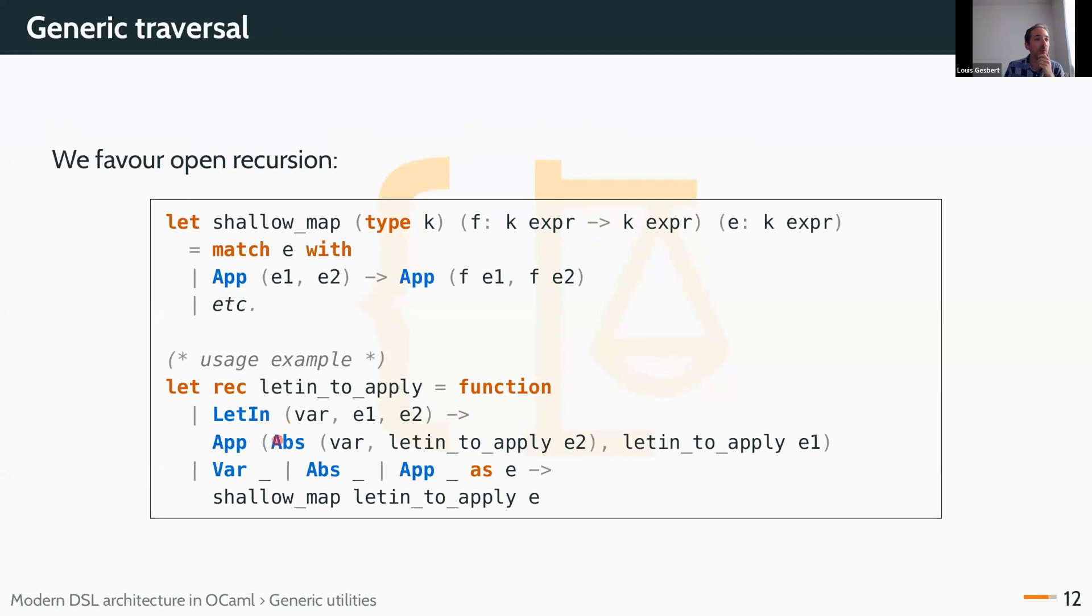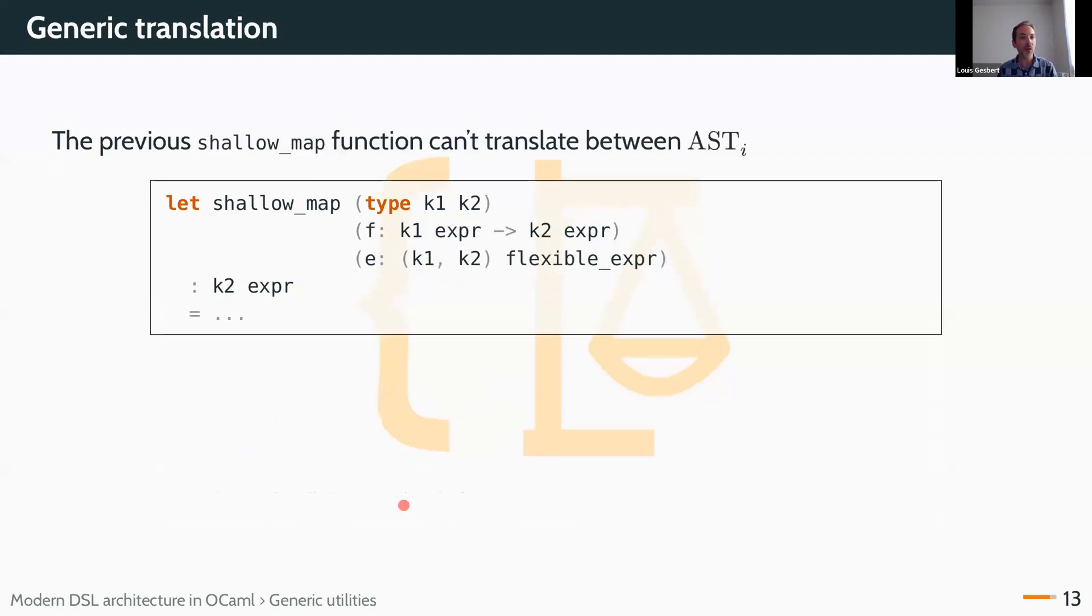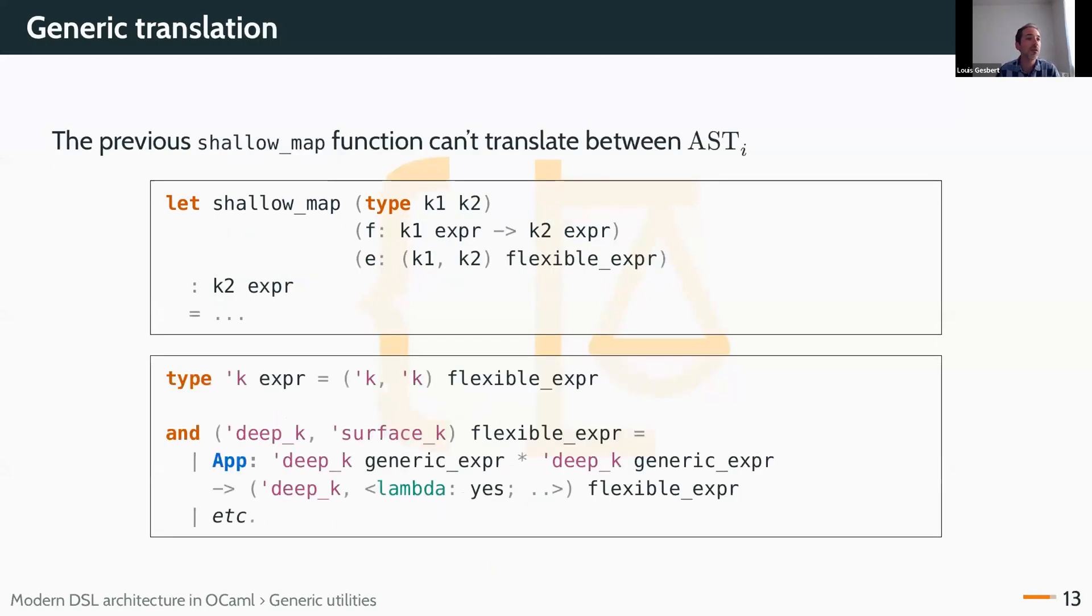What that means is that here, when I match this node, actually the translation is only using let-in to app, so there's no trouble. But here, I already know that let-in has been excluded from that match case. When I call shallow_map here, I know that the surface term can't be a let-in, so the deep term can't be a let-in either. And I can return this.